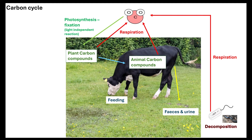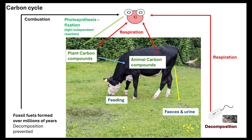The decomposers release carbon dioxide back into the atmosphere. If any animal or plant material has not been decomposed — because it's too cold, there's not enough oxygen, or it's been covered with sediment — and is left for millions of years, fossil fuels start to form. Those fossil fuels can then be combusted as a fuel source, again releasing carbon dioxide back into the atmosphere, recycling nutrients within the ecosystem.